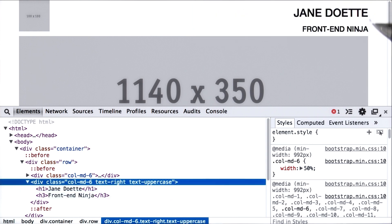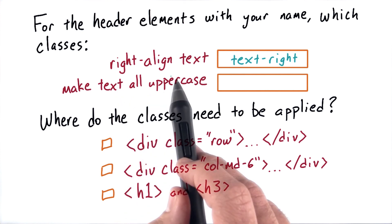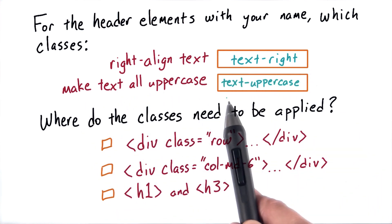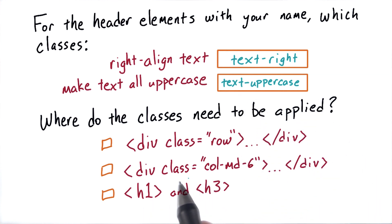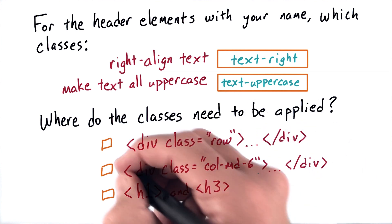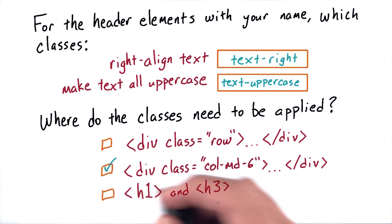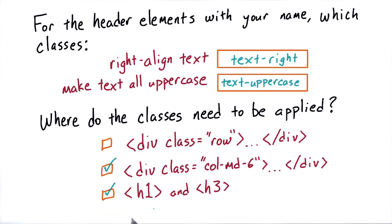We have capitalized text that is aligned on the right. For right aligned text, we just need text-right, and to make text uppercase, we simply add text-uppercase. It worked when we added these classes to class equals column medium six, but you could also add it to the h1 and h3 tags. While adding it to h1 and h3 would work, it's actually a lot cleaner when you add it to the div containing them.